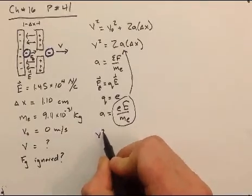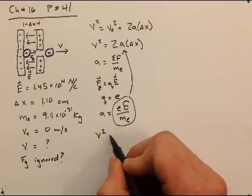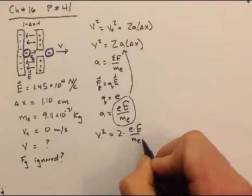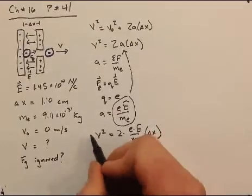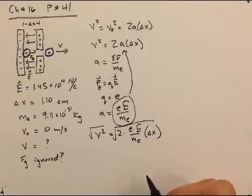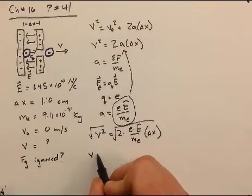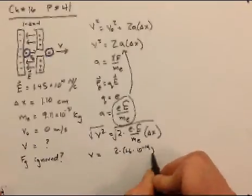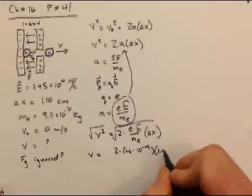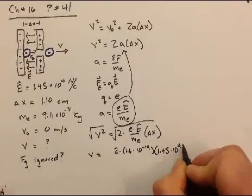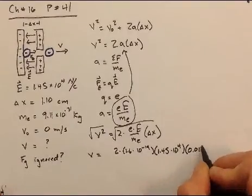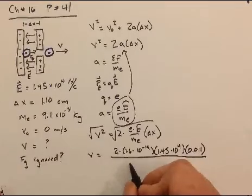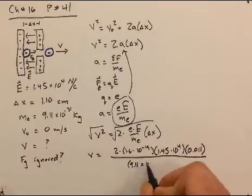And we would get that v squared, the final velocity of the electron squared, would equal 2 times e times e divided by m sub e times delta x, right? So, if we wanted to solve for v there, we would take the square root of each side, and we would get that v is equal to 2 times 1.6 times 10 to the minus 19th times charge of an electron in coulombs times the magnitude of the electric field times delta x .011, right? I always convert to our favorite units, meters, meters per second squared, right? And we're going to divide this by, and we're going to divide this by the mass of an electron.